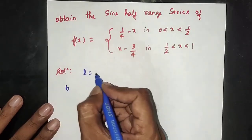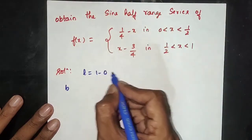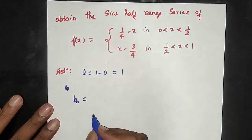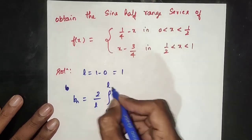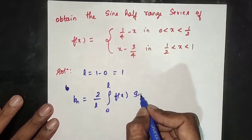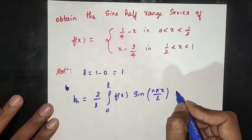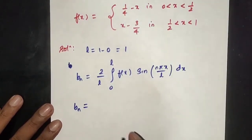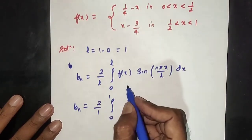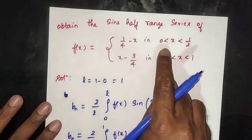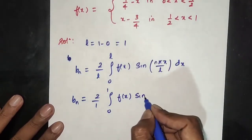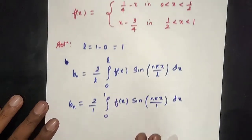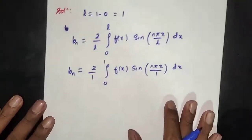First, find l. l is equal to 1 minus 0, so x value starting 1 minus 0 is 1. Next, find bn using the formula: bn equals 2 by l, integral from 0 to l of f(x) sin(n pi x / l) dx. The limit changes to 0 to 1/2.